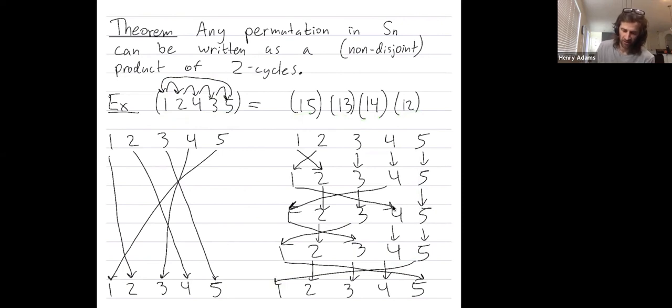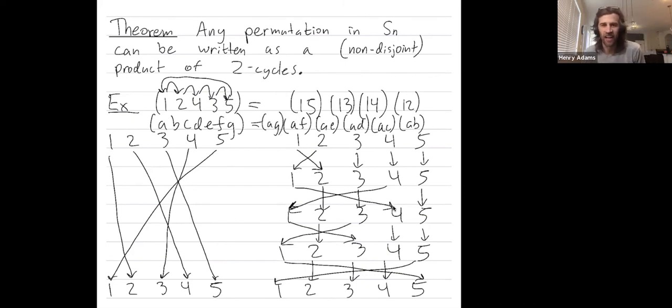You might get the pattern. If I had a 7-cycle A, B, C, D, E, F, G, the pattern is: first swap A and B, then A and C, then A and D, then A and E, then A and F, and finally A and G. That accomplishes our goal of writing this 7-cycle as a product of two-cycles.